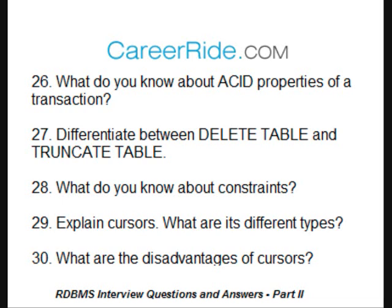Explain cursors. What are its different types? Cursors are like a virtual table. They have rows and columns as specified by a query. The current row concept of the cursor is a pointer to a row in the virtual table. The different types of cursors are static, dynamic, forward only, and keyset driven.